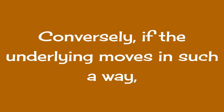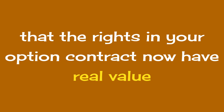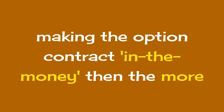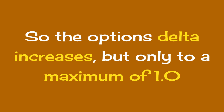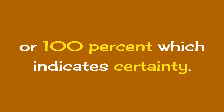Conversely, if the underlying moves in such a way that the rights in your option contract now have real value, making the option contract in the money, then the more likelihood there is that the option will expire with some intrinsic value. So the options delta increases, but only to a maximum of 1, or 100%, which indicates certainty.